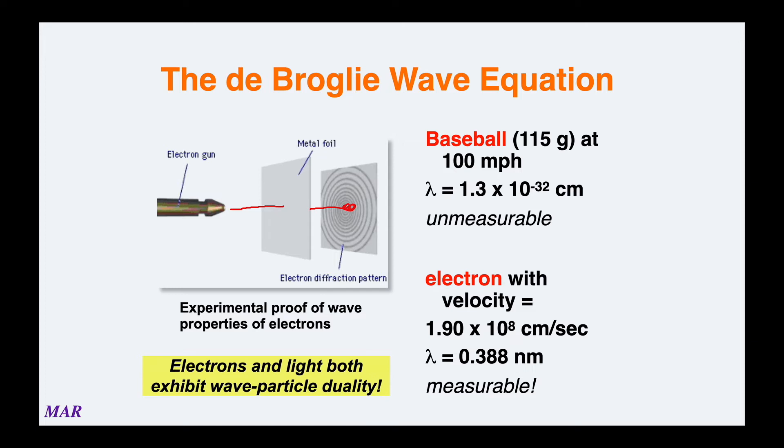Electrons and light both exhibit wave-particle duality. Both electrons and light sometimes act like waves and sometimes act like particles. The electron acts like a wave and it goes through and makes that cool diffraction pattern.